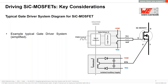The gate driver IC receives the PWM control signal from the controller and passes it through the isolation barrier in the input stage to control the totem pole transistor output stage. There is a high side and a low side transistor for turning the SiC MOSFET on and off respectively. Galvanic isolation in the auxiliary power supply is achieved by means of a transformer, typically providing two output voltage rails — one positive to fully turn on the SiC device and one negative to reliably turn it off.